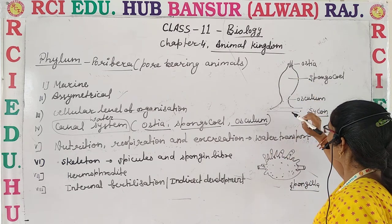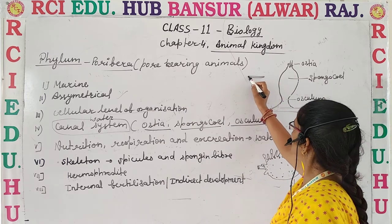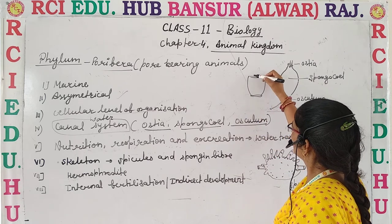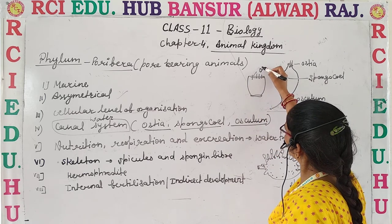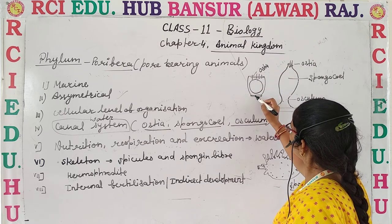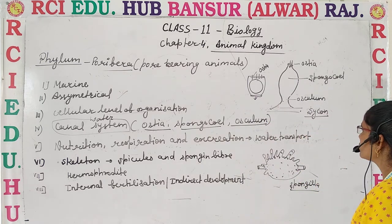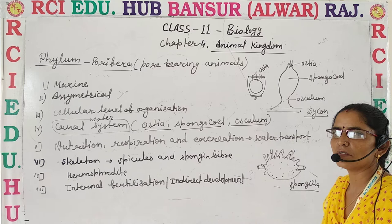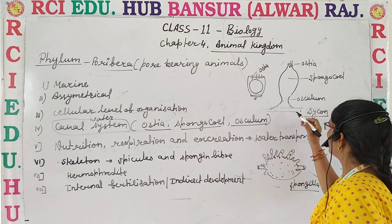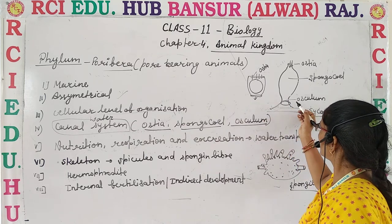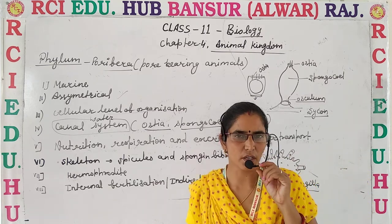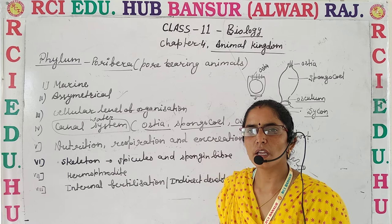This is the diagram of a sponge. Generally, they have this type of structure. The ostia are the pores. The cavity present between the ostia and osculum is known as the spongocoel, because the sponge body contains a body cavity. The pore through which water exits is known as the osculum. So, the water canal system is the most peculiar feature of Porifera.